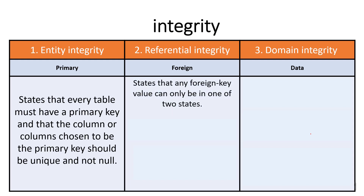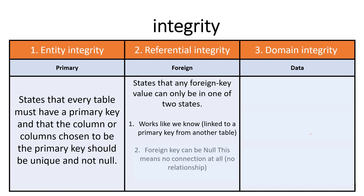Referential integrity acts on the foreign key and states that any foreign key value can only be in one of two states. The first is that it's linked to a primary key from another table — as we already know. The second is that the foreign key can be null, meaning there is no connection or relationship. Primary keys must be not null, whereas foreign keys don't have to have a value — but then there would be no connection between the tables.